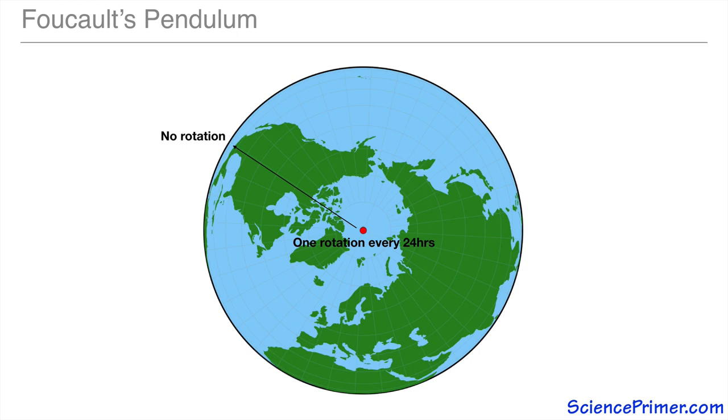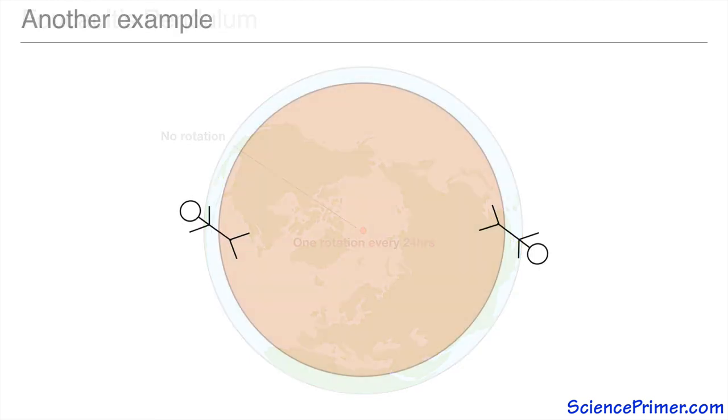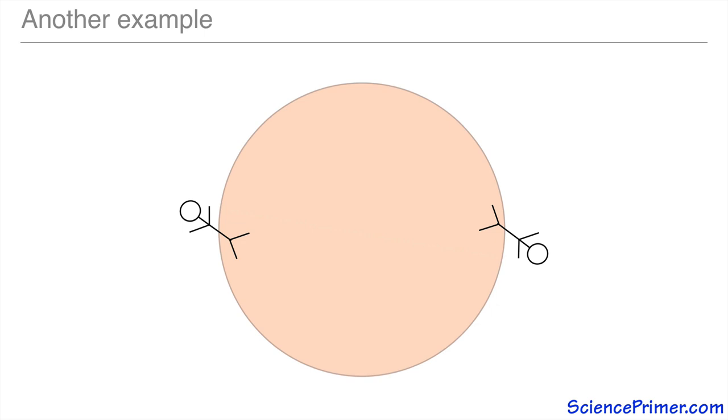We can use a game of catch to demonstrate other implications of the relative nature of motion. If the observer, the two people playing catch, and the ground are not moving relative to each other, a game of catch is easy to imagine because the ball just travels back and forth in a straight line between the two people.